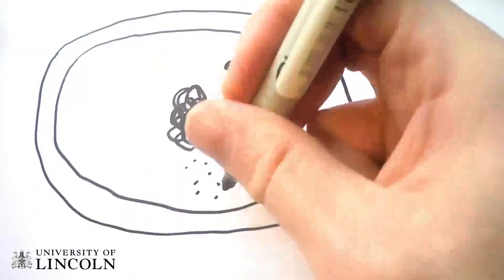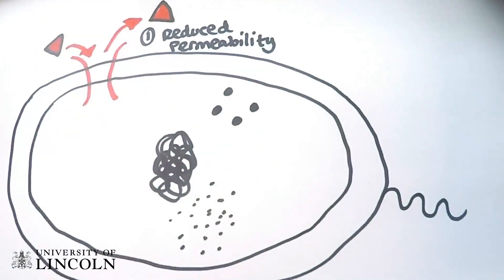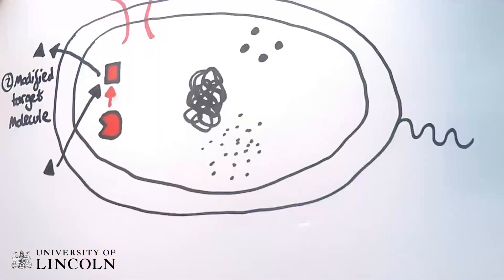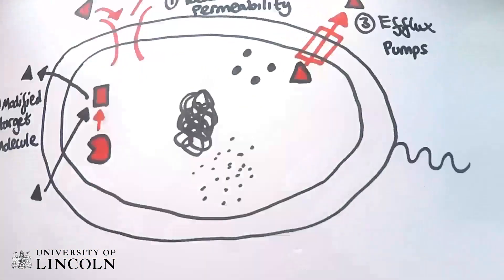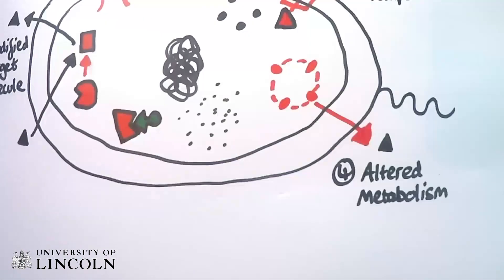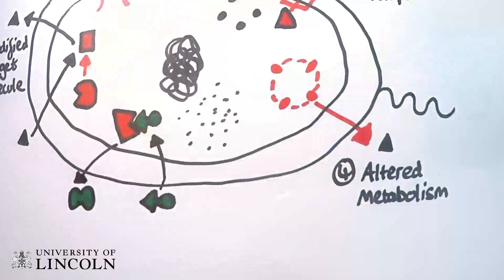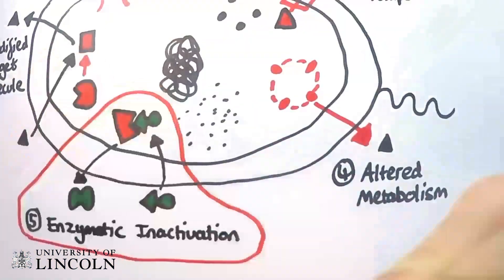There are five different types of resistance mechanisms found in bacteria: reduced permeability, modification of the target molecule, efflux pumps, altered metabolism, and finally inactivating enzymes which bind to the antibiotic and prevent its function. It is this mechanism that beta-lactamases fall under.